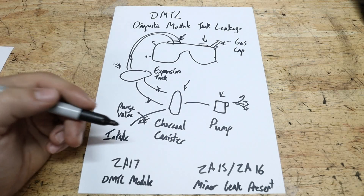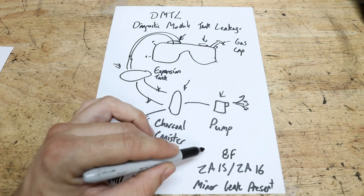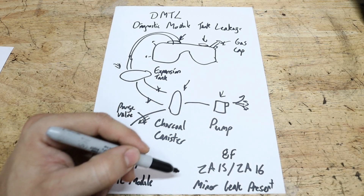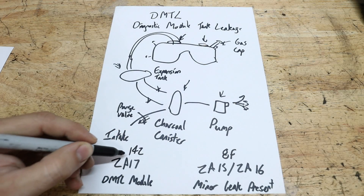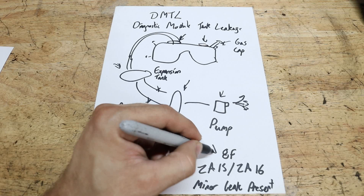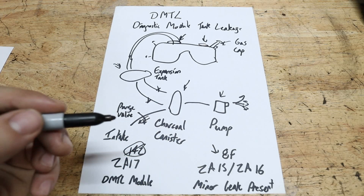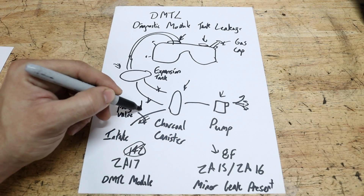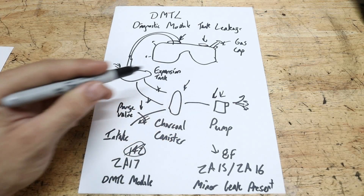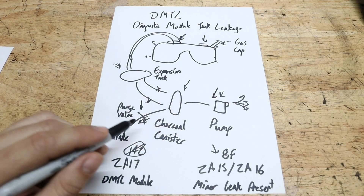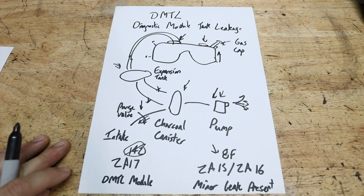Now we're going to take a look at the fault on my car. Since my car has an M54 motor, it's considered an 8F fault — a minor leak. If I had the other code it would show as code 142, but I don't have that one. So we're going to focus on the entire system today. My theories are a possible bad purge valve, a bad connection at the pump or charcoal canister, or finally a bad gas cap. Let's go take a look at my BMW X5.